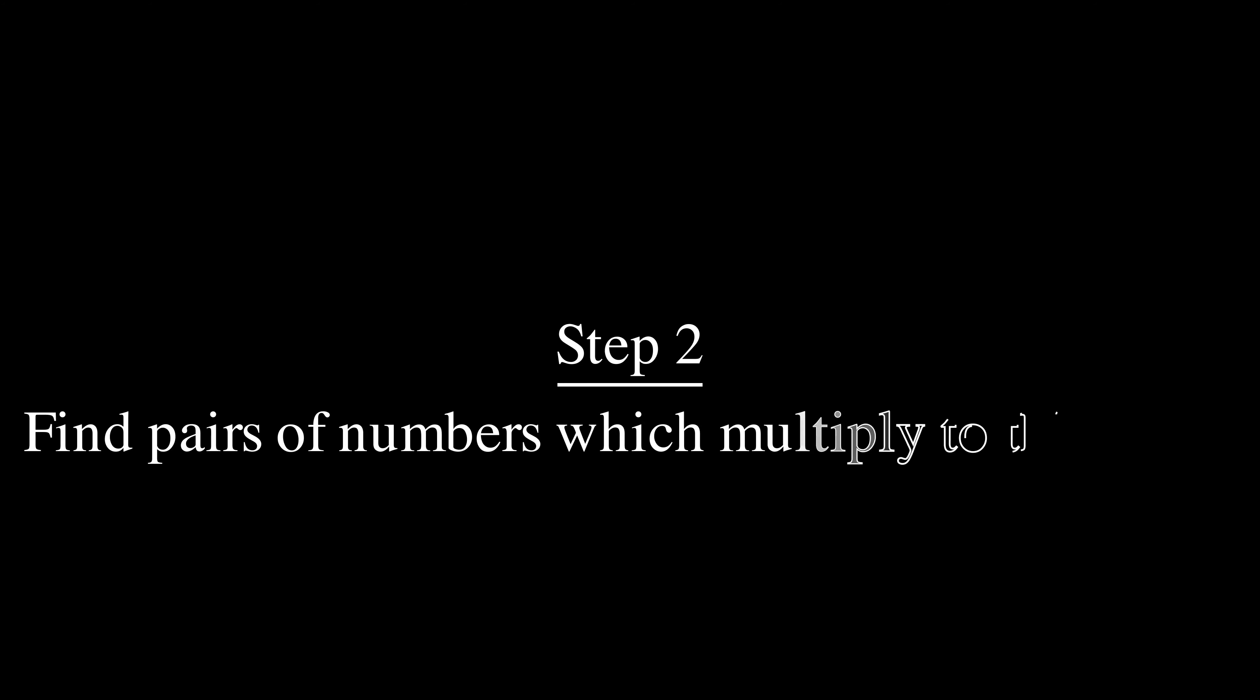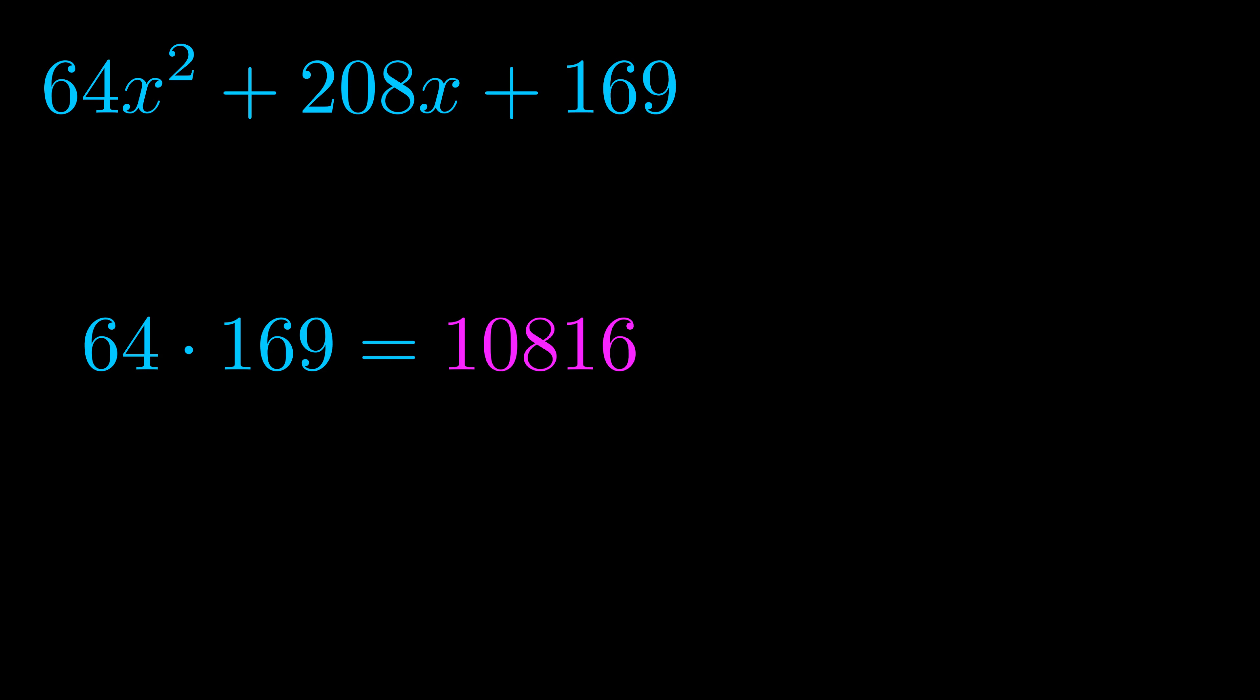Step two is to try to find all of the pairs which multiply to this number. Now it turns out you don't really need to find all of them but go ahead and write down as many numbers as you can that multiply to the magenta value for now. Pause the video and resume when you're ready to continue. Okay here's what I came up with.